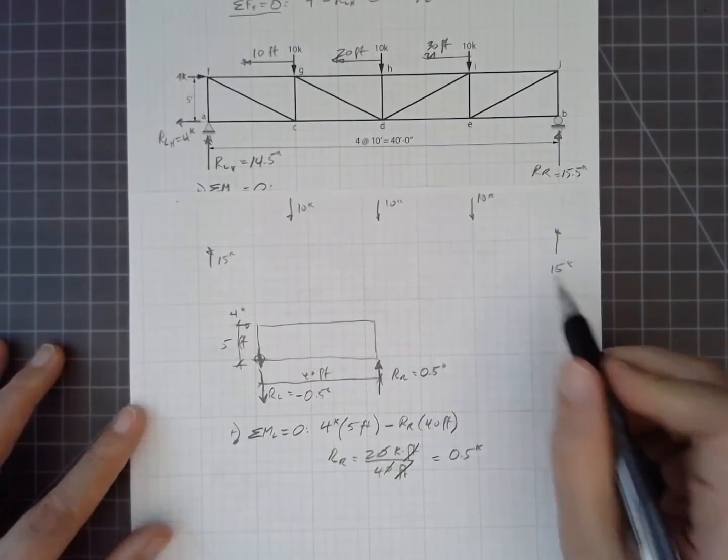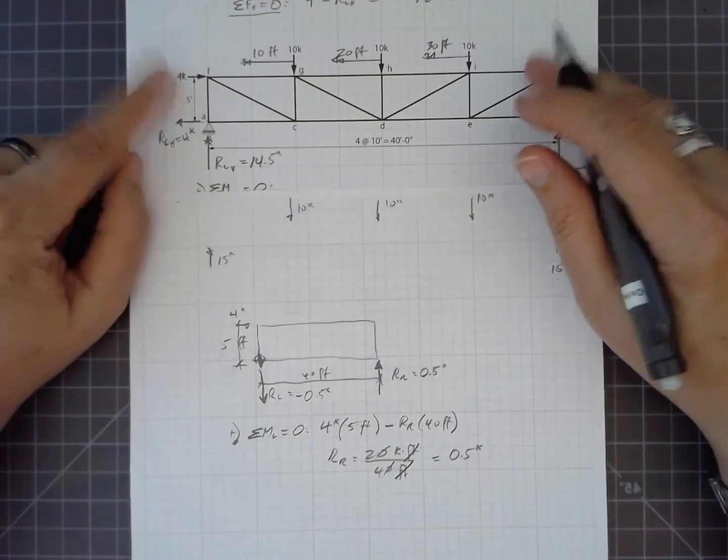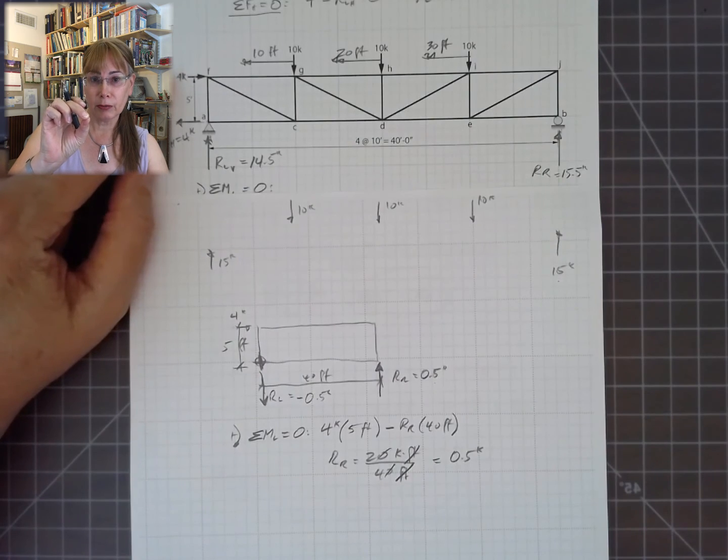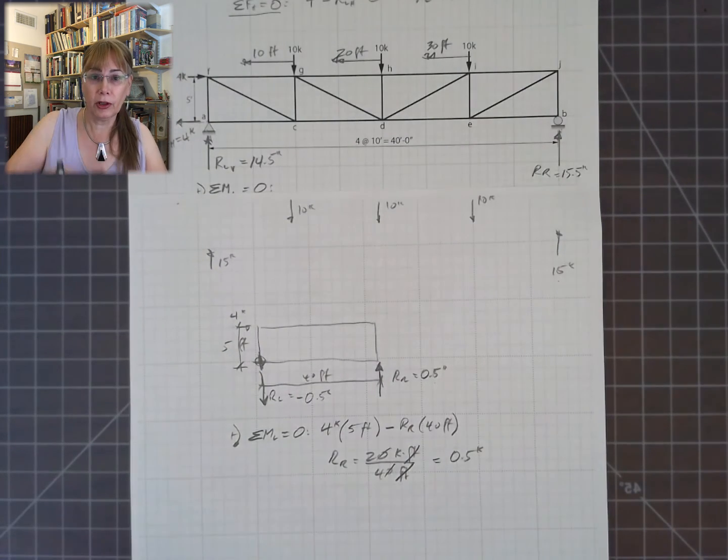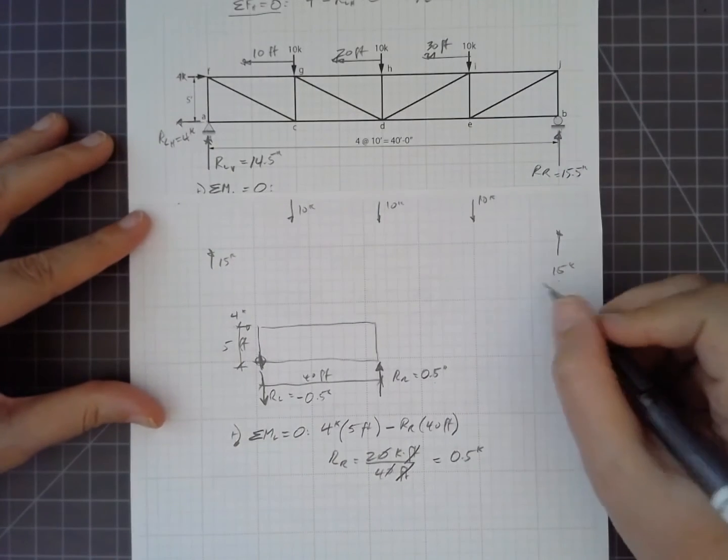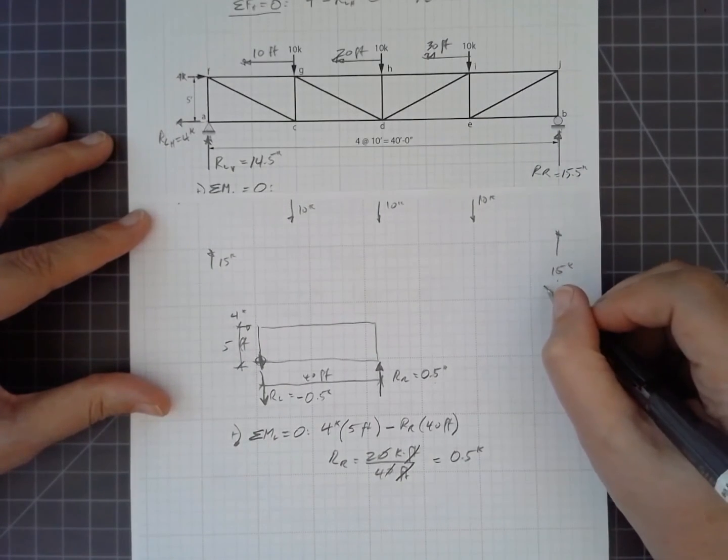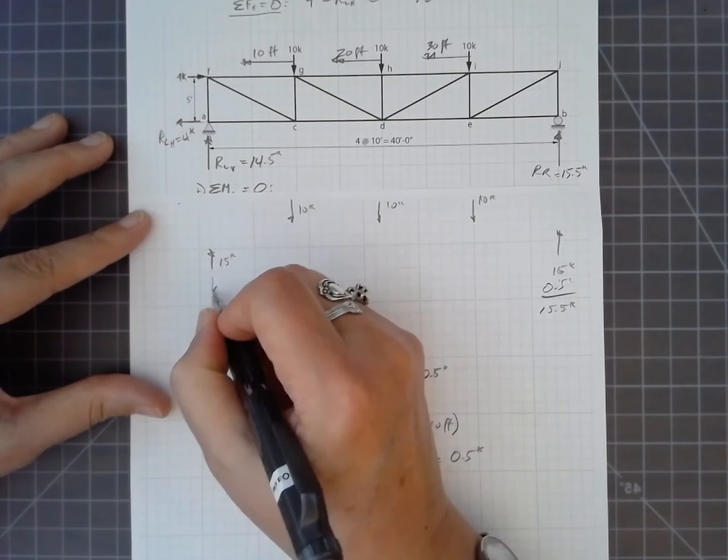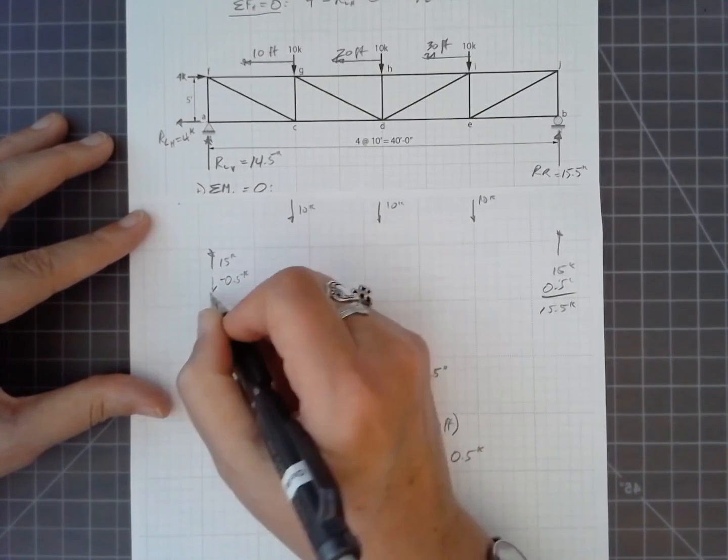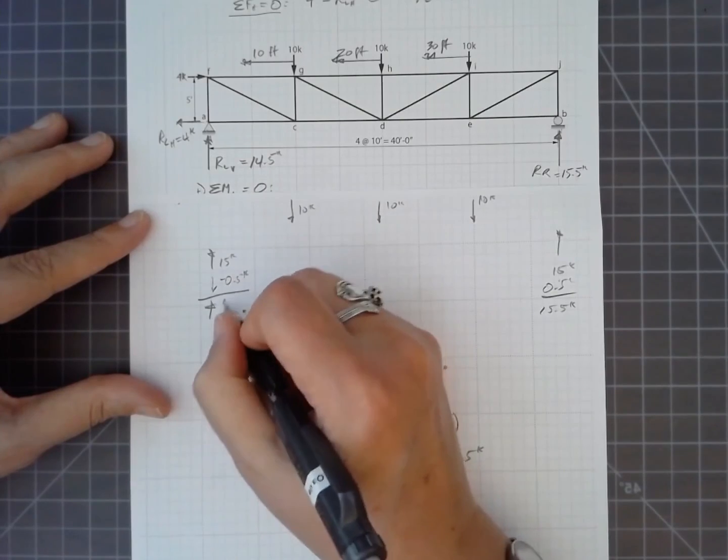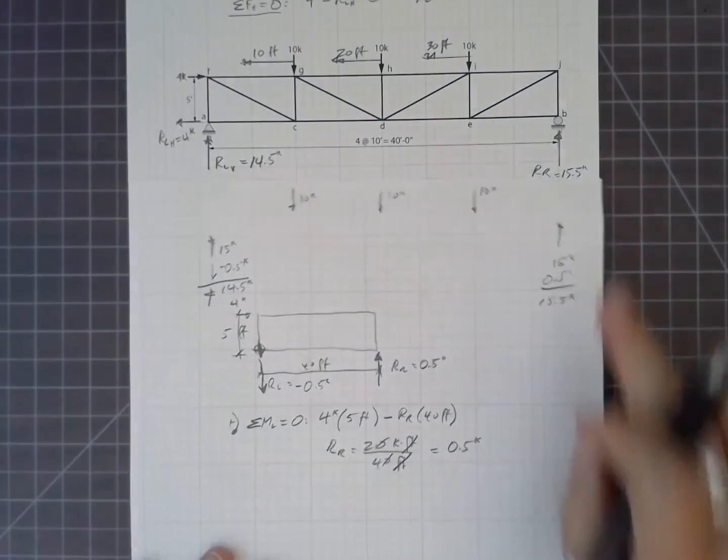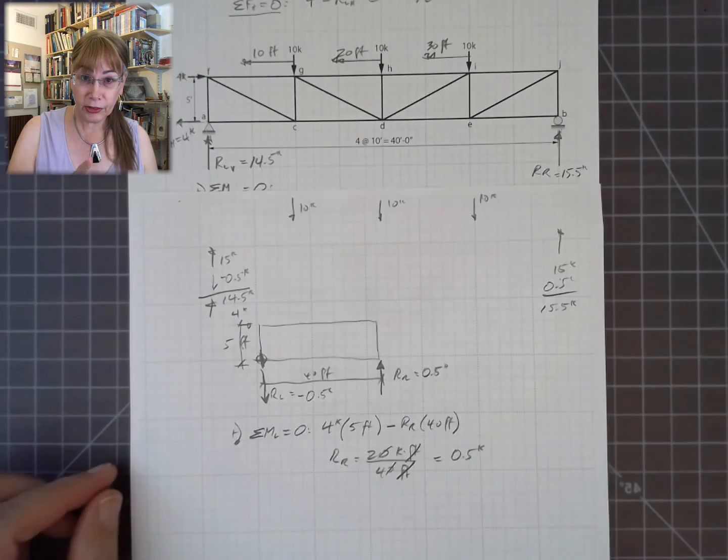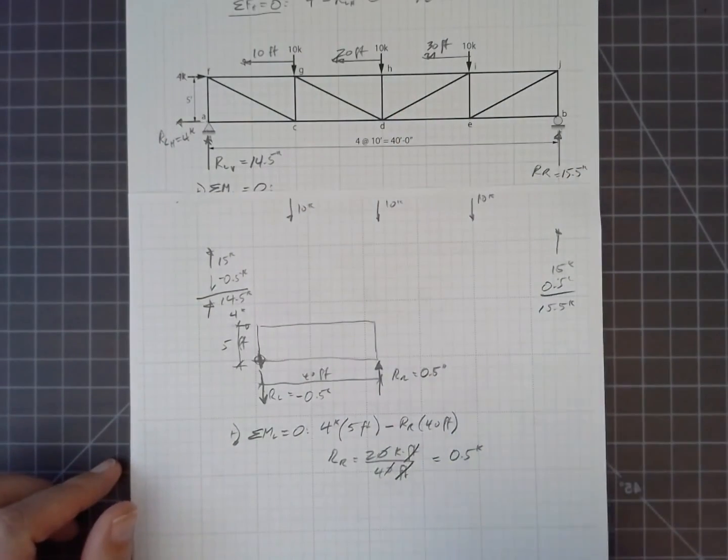So these then add, because we're superimposing forces onto the same location. So this is an important concept that you can take moments and add them from different loads as long as you're summing moments about the same point. So I've got 15 kips over here. I'm going to add 0.5 kips, 15.5 kips. And then over here, I've got negative 0.5 kips, so I'm subtracting that, and I get a net of 14.5 kips. And that's exactly what we got before. So this is an alternate method, but don't use this alternate method until you fully understand how to do a basic reaction calculation.